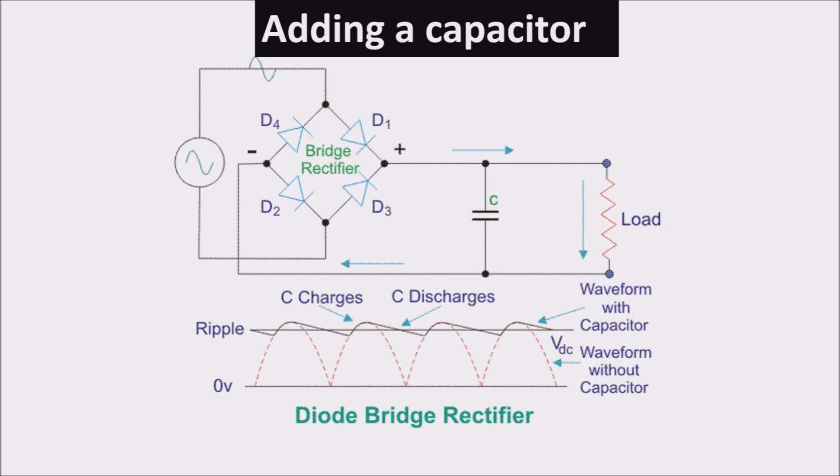In this way, we have a very little variation of our output voltage, that now can be called direct voltage. We can add more capacitors for further stabilization.